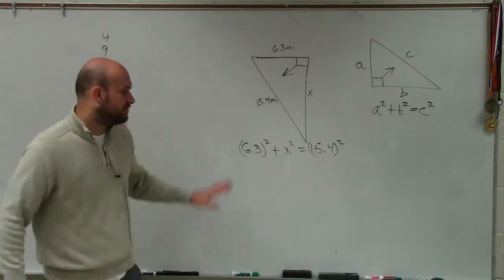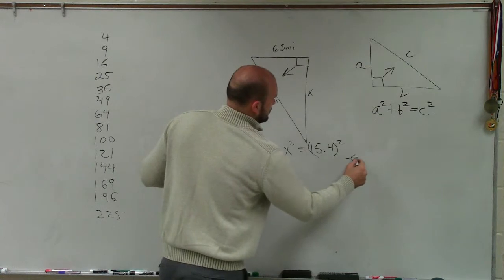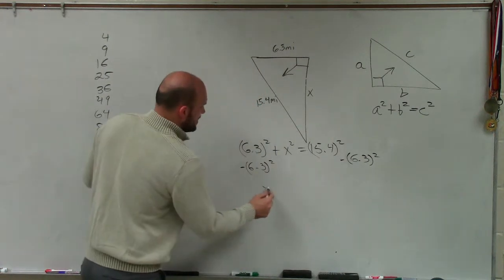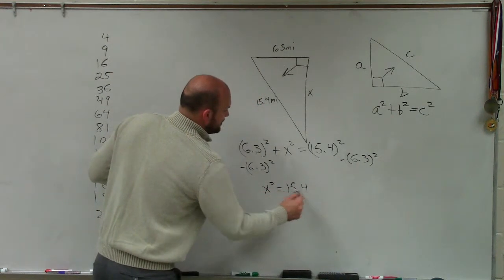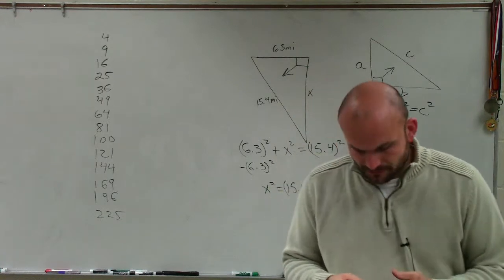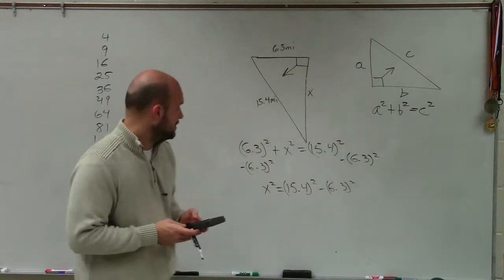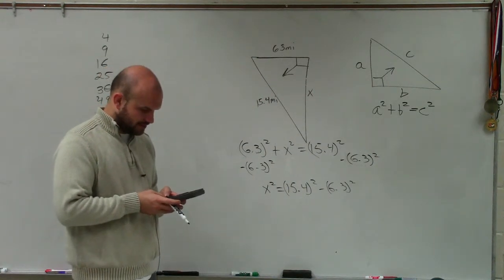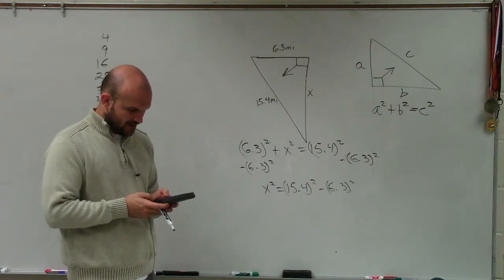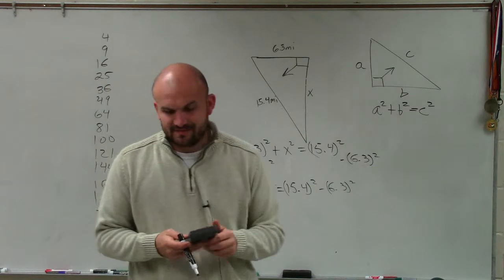Now before I even evaluate this, I can subtract the 6.3 squared. So therefore, I have x squared equals 15.4 squared minus 6.3 squared. So then simply what I'm going to do is just take 6.3, square it, and then do 15.4 squared minus second answer. And I get 197.47.